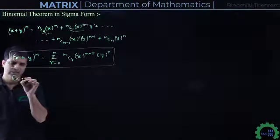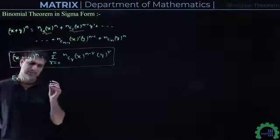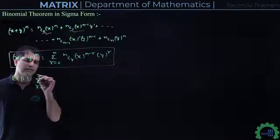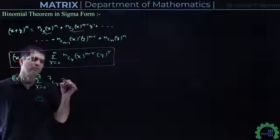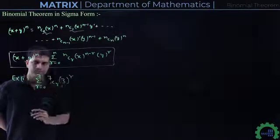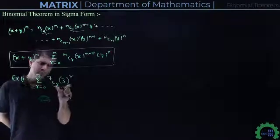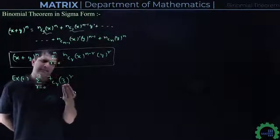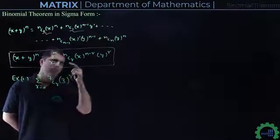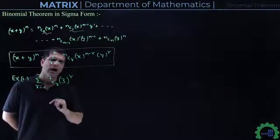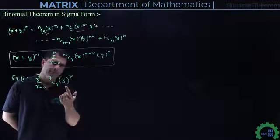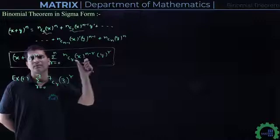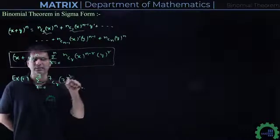Let's discuss our first example: Σ (R=0 to 7) 7CR · 3^R. If we visualize this carefully, one thing is clearly visible — one term is missing. Because in our standard form, there is also an X^(N-R) term. Here, Y^R form (which is 3^R) has come, but the X^(N-R) form is not present. That means we have to generate that.